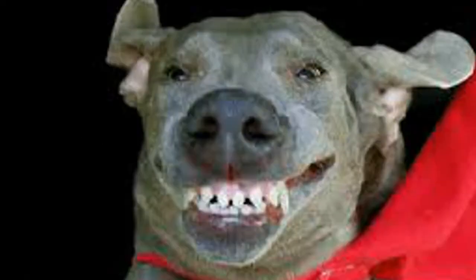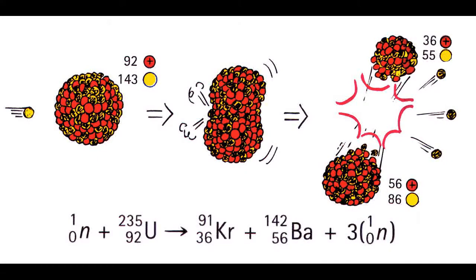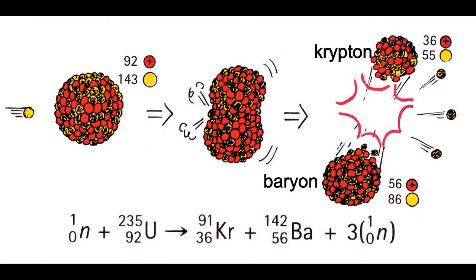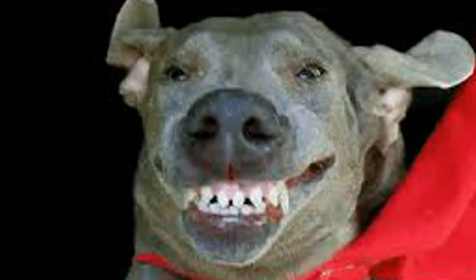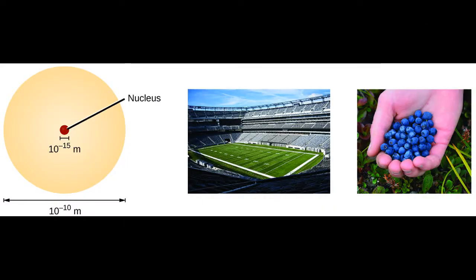An example of this is what occurs during nuclear fission. A neutron is combined with a uranium nucleus, causing it to split in half into a krypton and barium nucleus. In the process, over 200 million electron volts of energy are released, or about 3.2E-11 joules. This might not seem like a lot, but all of it is coming from a single tiny nucleus.